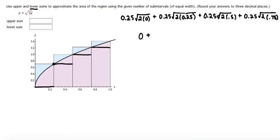The second term: 2 times 0.25 is 0.5, take the square root of that to get 0.707, and then multiply that by 0.25 to get 0.177.